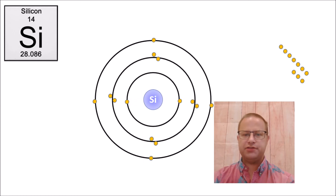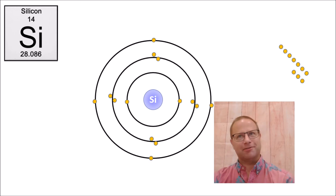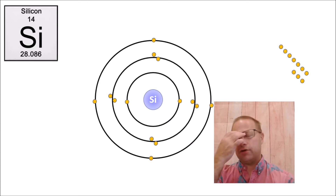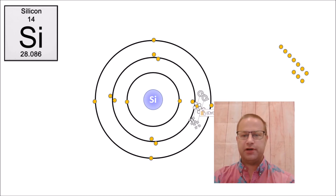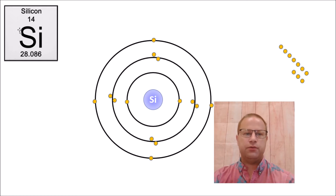Is silicon stable? No, it's not — it doesn't have eight in that outer shell. Now, if you've studied chemistry, you might note the third shell can actually hold 18, divided into different orbitals, but that's getting too complex for this class. Suffice it to say, if we hit eight, that atom is likely to be more stable. Silicon needs to bind to four other atoms in order to be happy, just like carbon.